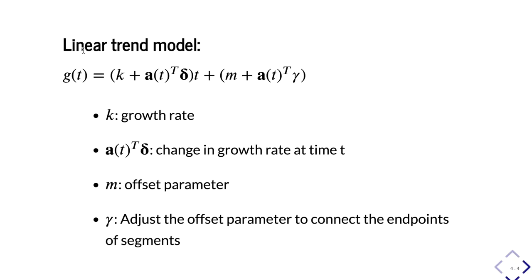Similarly, the linear trend model has a slope — basically the growth rate — and the change in slope is a(t) transpose delta, which is the changing growth rate at time t. M is the offset parameter or intercept of the model, and gamma adjusts the offset parameter to connect the segments.